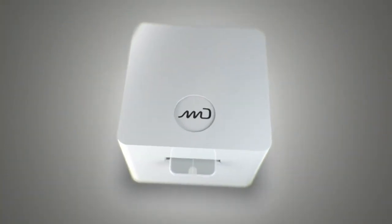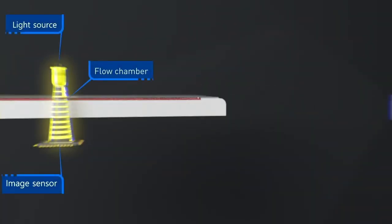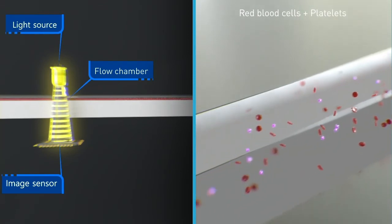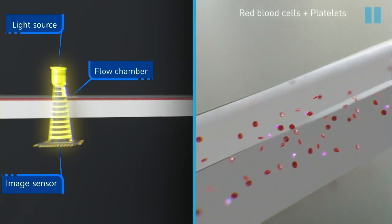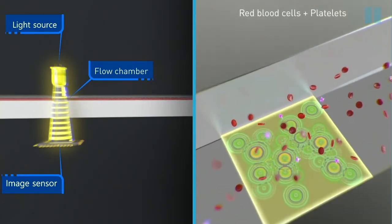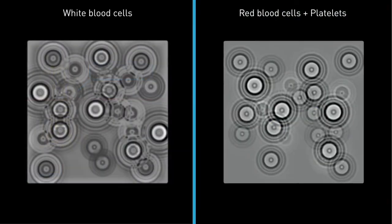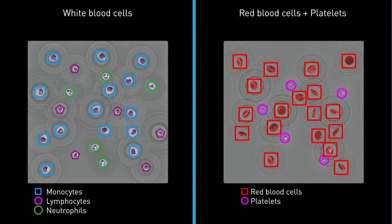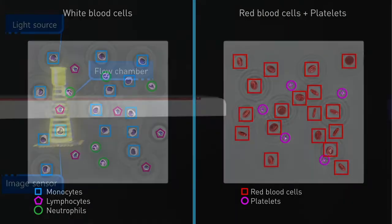For its CBC test, MyDiagnostics uses lens-free imaging, a novel technology that only needs a light source, image sensor and flow chamber. The cells diffract the light that is emitted by the light source, creating holographic images that are reconstructed to allow machine learning techniques to classify different blood cells.